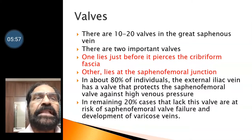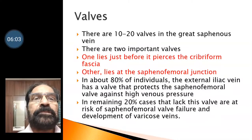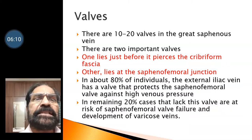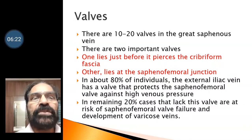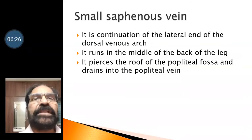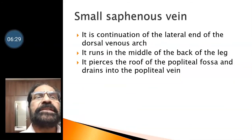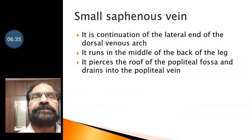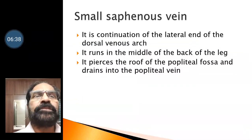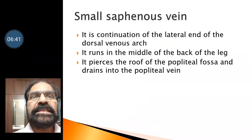In about 80% of individuals, the axillary iliac vein has a valve that protects the saphenofemoral vein against high venous pressure. In the remaining 20% who lack this valve, there is a risk of saphenofemoral valve failure and development of varicose veins. The small saphenous vein is the continuation of the lateral end of the dorsal venous arch. It runs in the middle of the back of the leg, pierces the roof of the popliteal fossa, and drains into the popliteal vein.